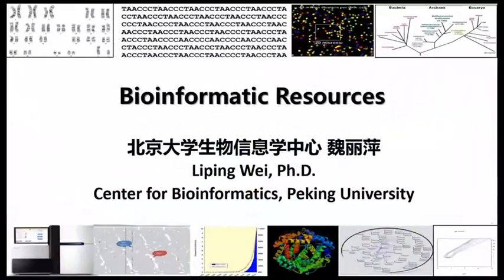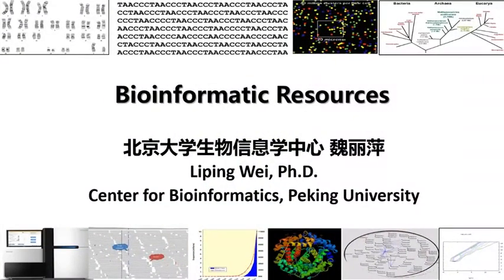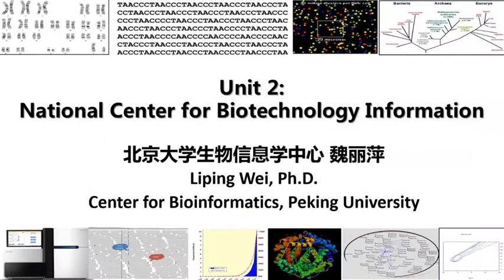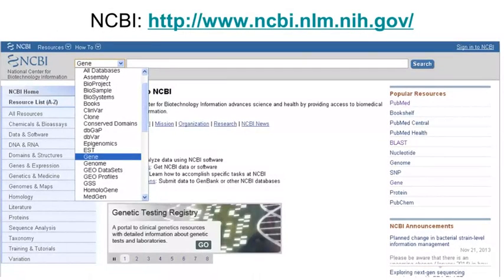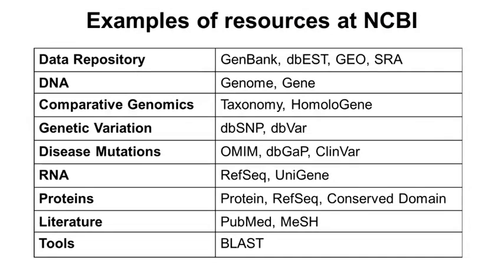Welcome back. Let's continue with our discussions of bioinformatics resources. In this unit, let's look at a few examples of databases and software at the National Center for Biotechnology Information, or NCBI. NCBI was established on November 4, 1988, as a division of the National Library of Medicine at the National Institutes of Health in the U.S. It has lots of raw data and secondary data, as well as a number of software tools, and it is one of the resources I use the most.